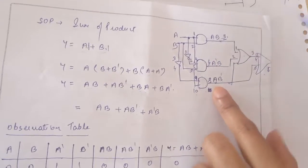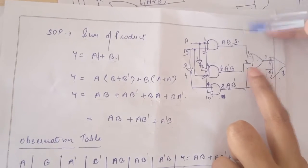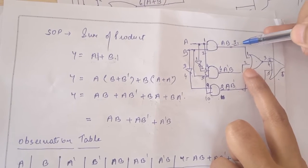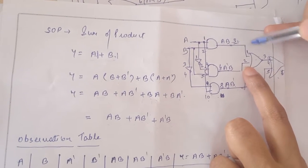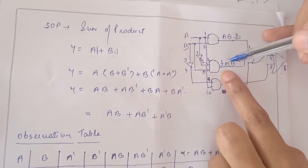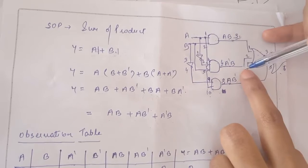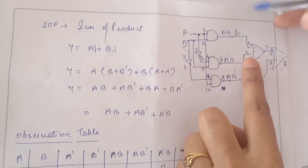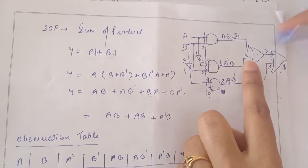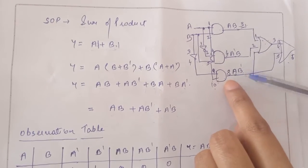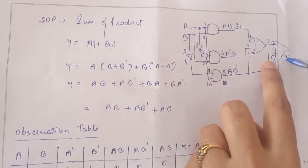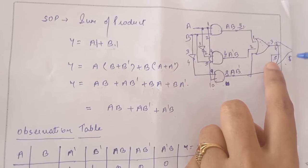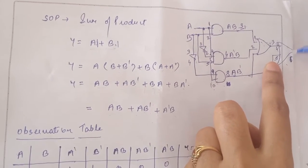Now we will perform the OR operation. The inputs will be connected at pin numbers 1 and 2 of the OR gate. The output of the first AND gate at pin number 3 is connected to pin number 1 of this OR gate, and the output of the second AND gate at pin number 6 is connected to pin number 2 of this OR gate. We get the output at pin number 3 of this OR gate. Again, the output from pin number 8 goes to input pin number 5 of the OR gate, and this output is connected to pin number 4, so we get the final output at pin number 6 of this OR gate.